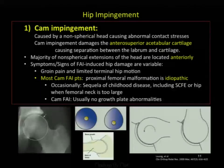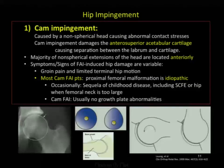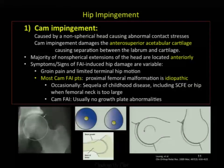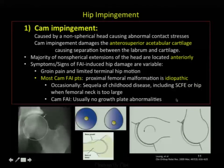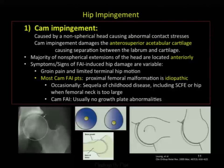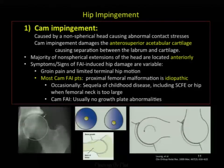Most of the non-spherical extensions are located anteriorly, so most of the damage is anterosuperior. Most patients are idiopathic, though sometimes there are sequelae of childhood disease, including slipped capital femoral epiphysis or a femoral head that is too large. Usually with CAM patients, there are no growth plate abnormalities.